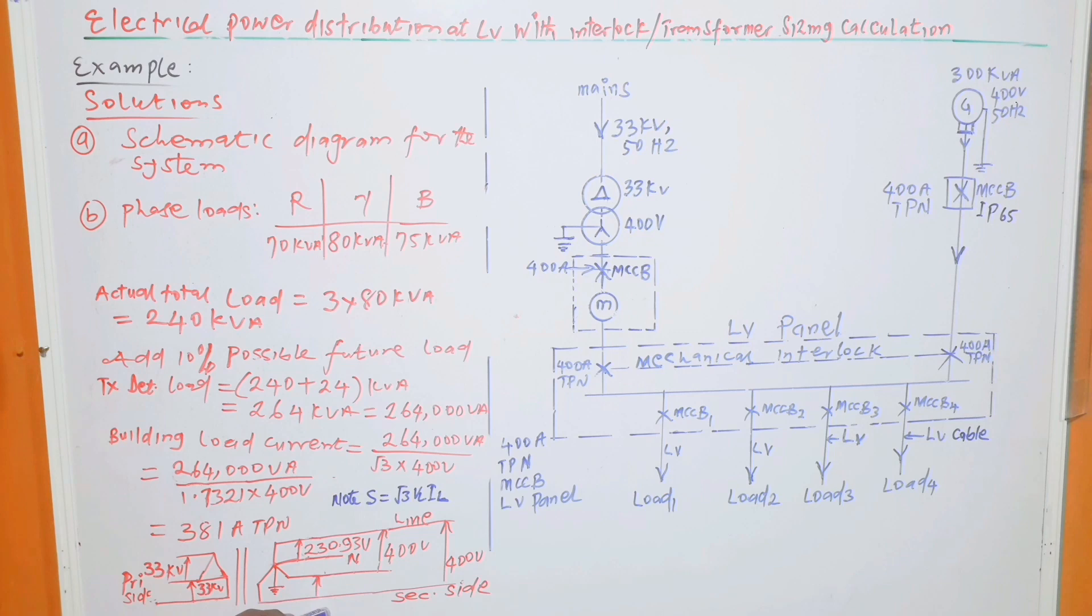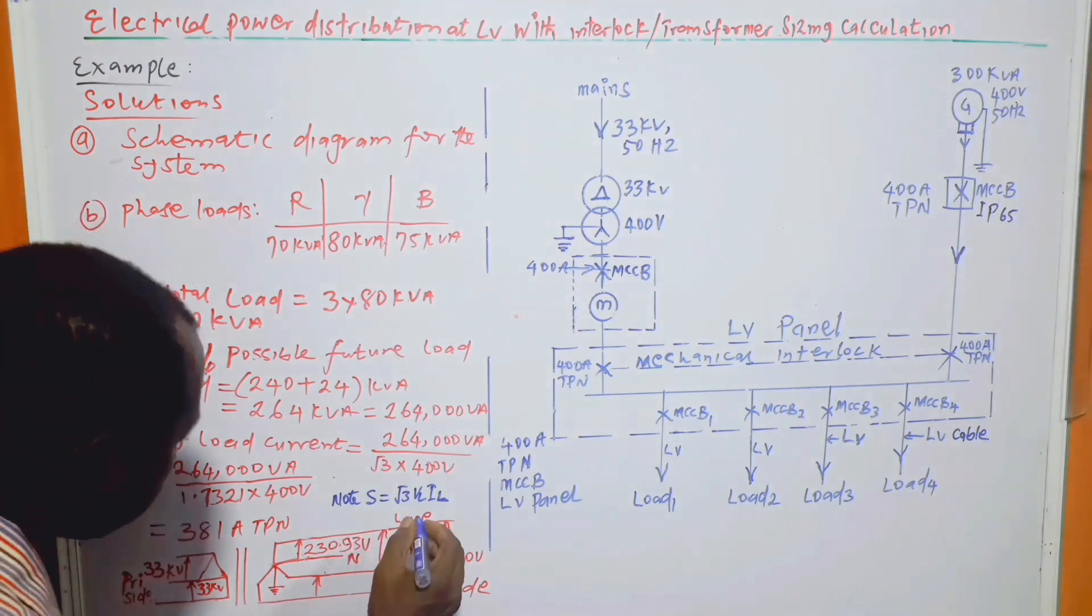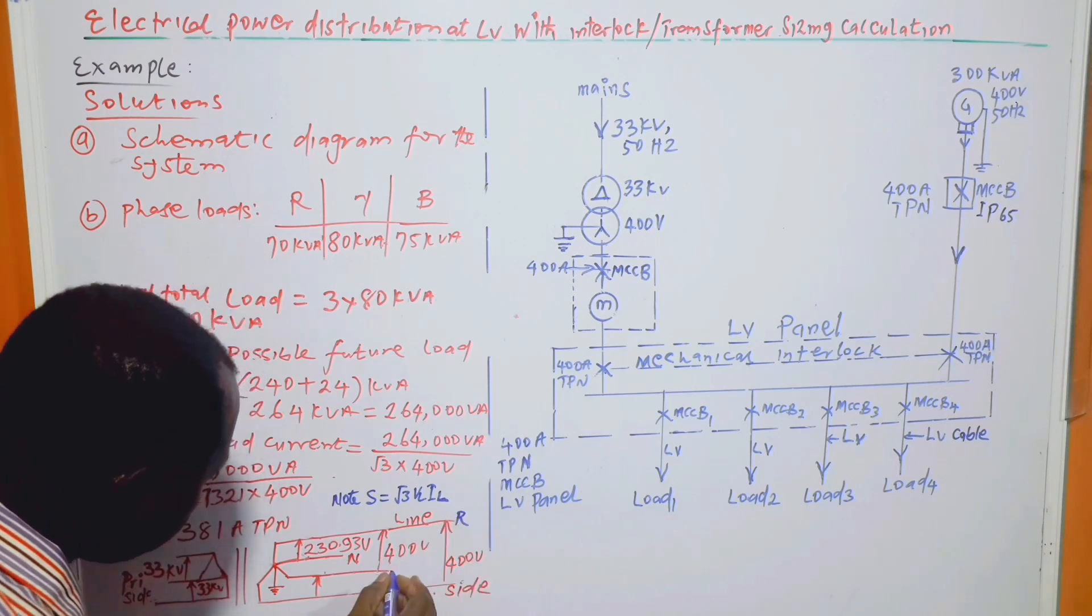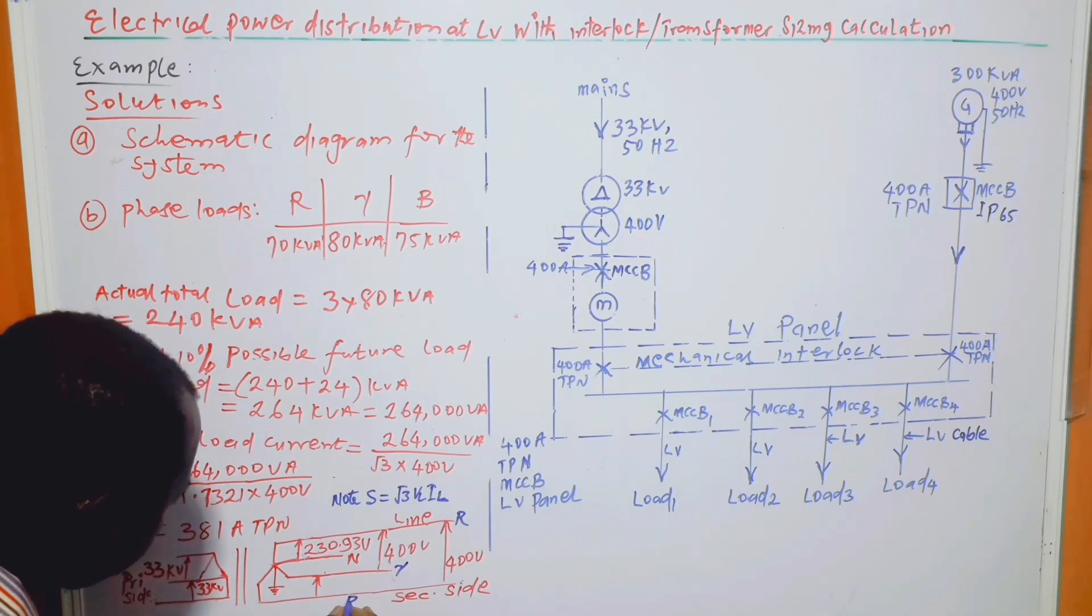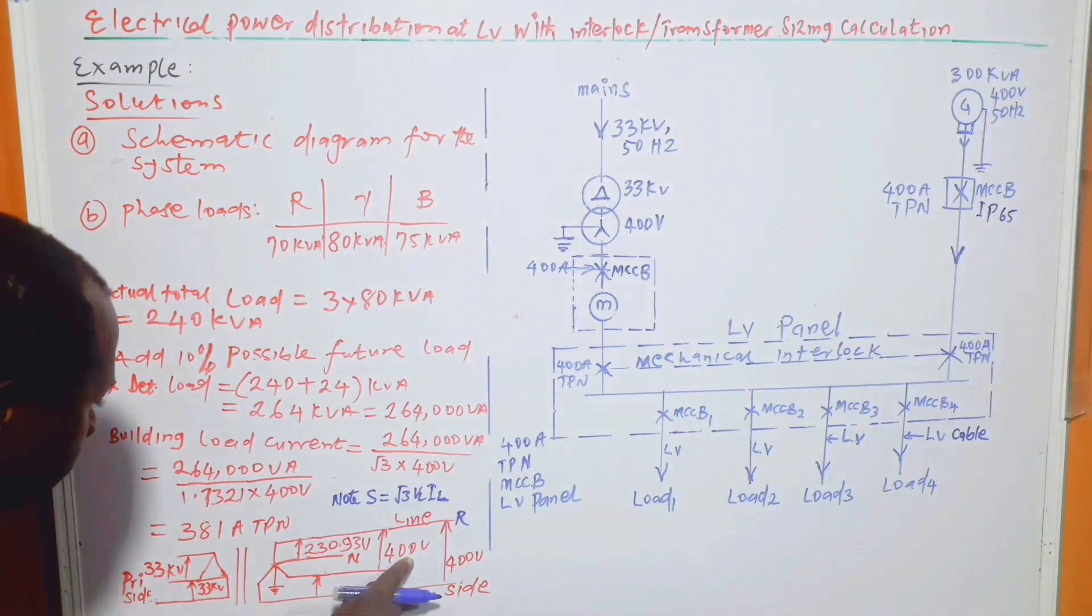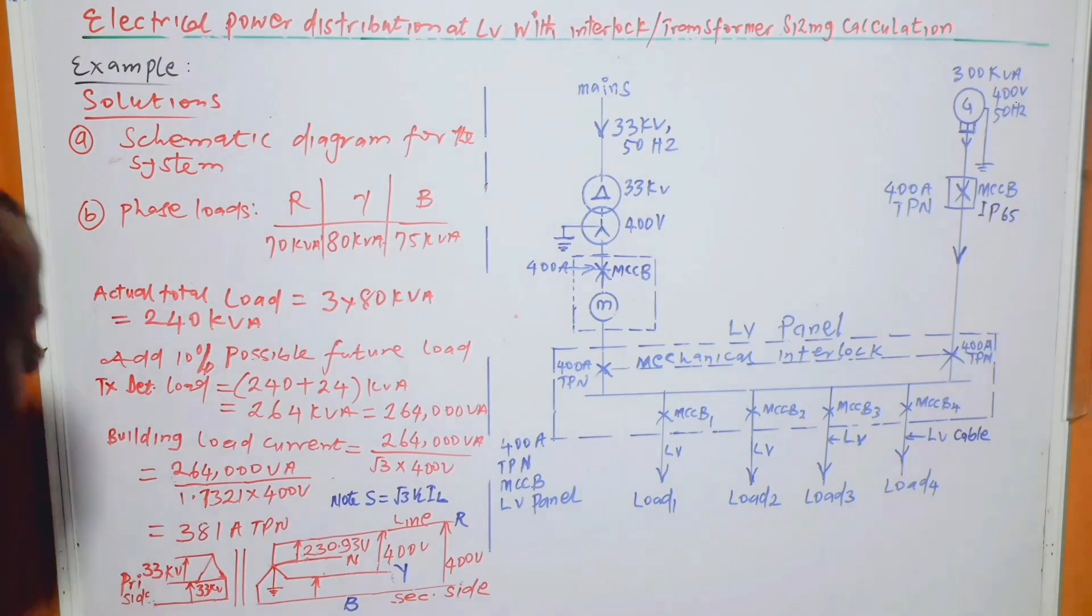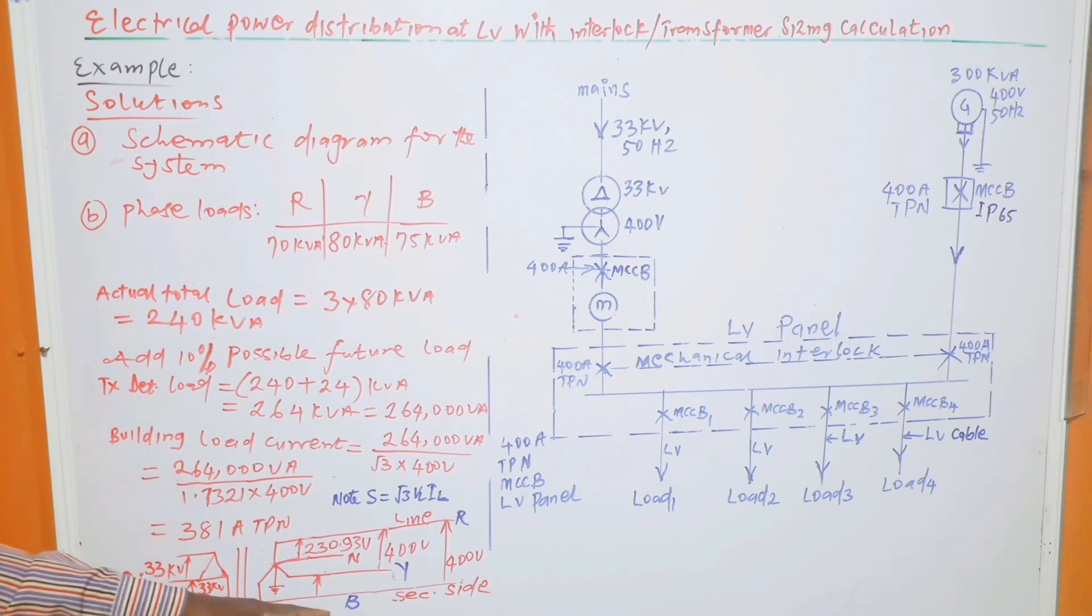So the current flow in this phase is also 381, and also in this phase is also 381. So actually, we can call this one the red phase, and this one will be the yellow phase, and this one the blue phase. So this is the secondary side, and this is the primary side. We have 33 kV line to line. And that is the answer to the B part of the question.